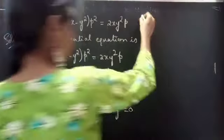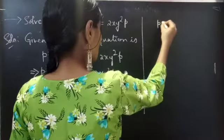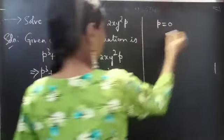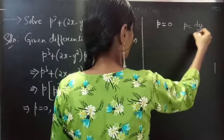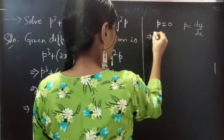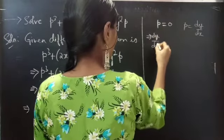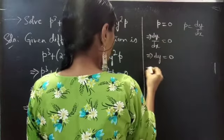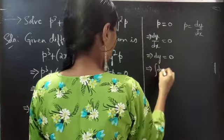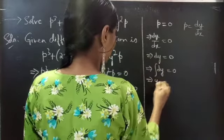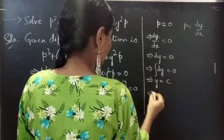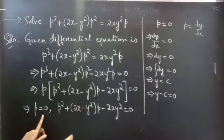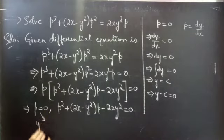Firstly, let's solve P equals to 0. Put P equals to DY by DX. Then DY by DX equals to 0, so DY equals to 0. By integrating, we get Y equals to an integral constant C. Therefore, Y minus C equals to 0 is the solution for P equals to 0.